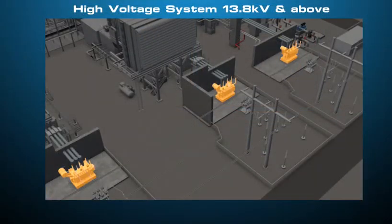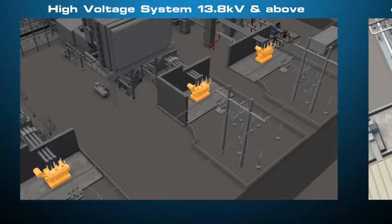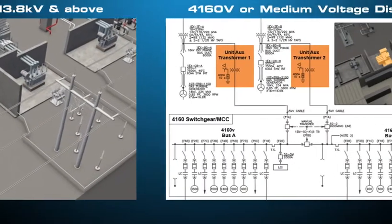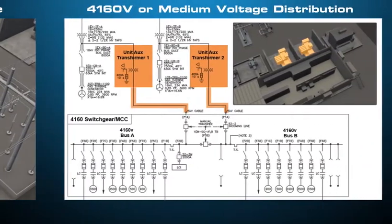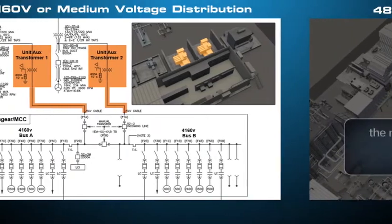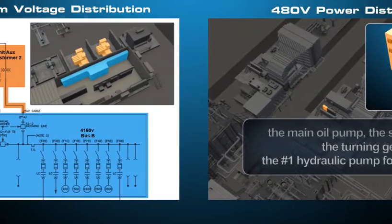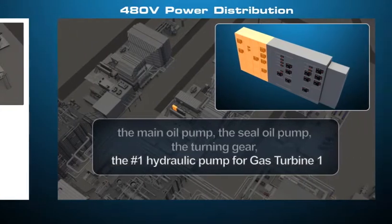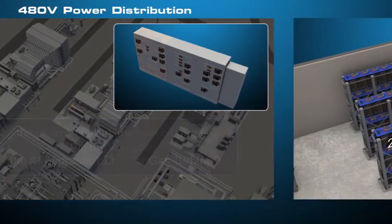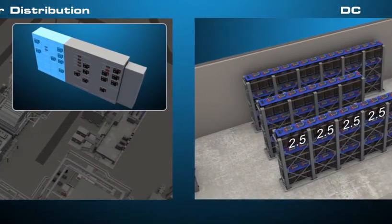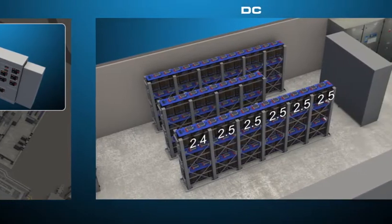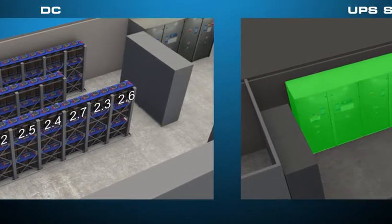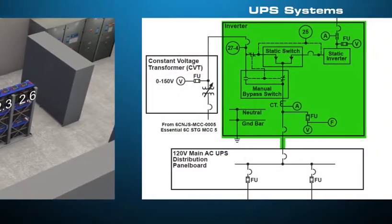The systems covered in the course include the high voltage system of equipment 13.8 kilovolts and above, 4,160 volt or medium voltage distribution, 480 volt power distribution, DC, and UPS systems.